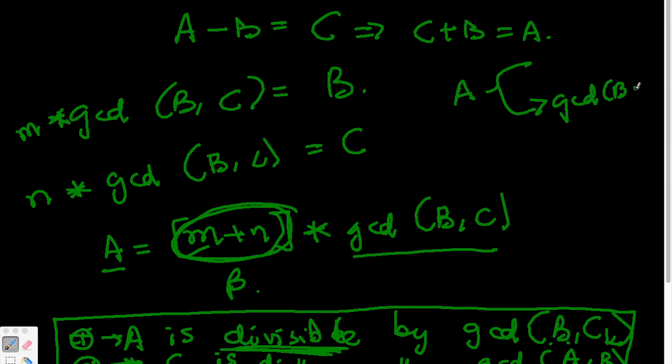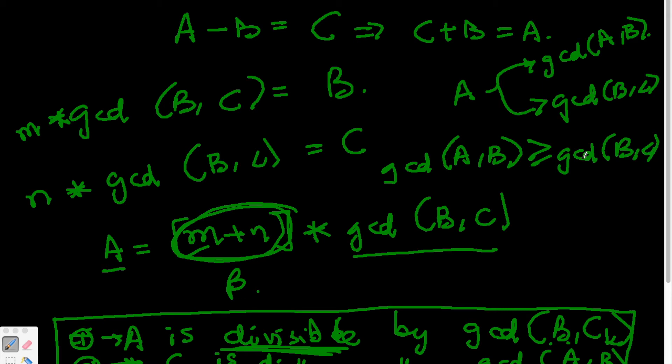But any number which divides both A and B has to be less than or equal to the gcd(A,B), which means that gcd(A,B) is greater than or equal to gcd(B,C).